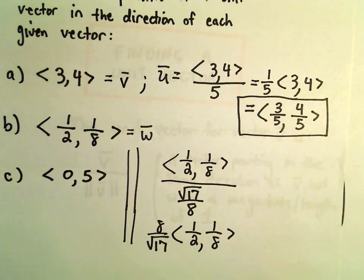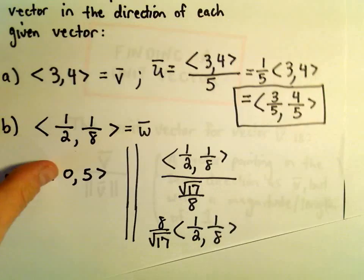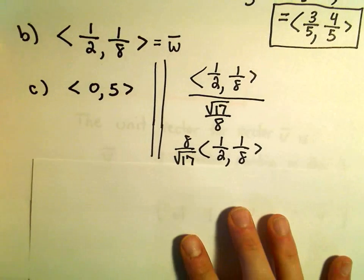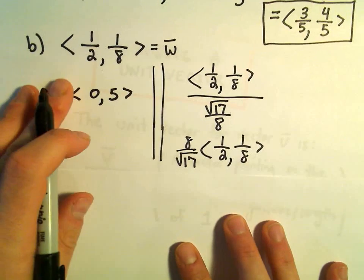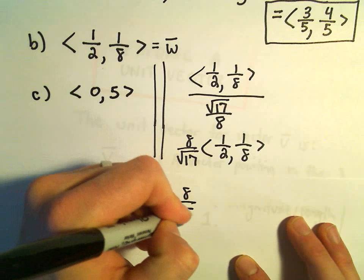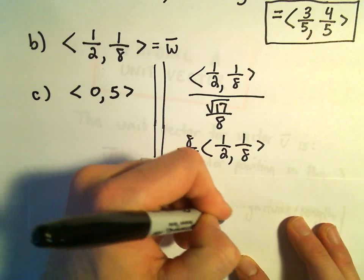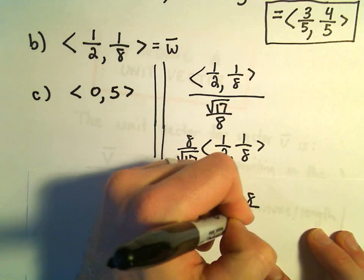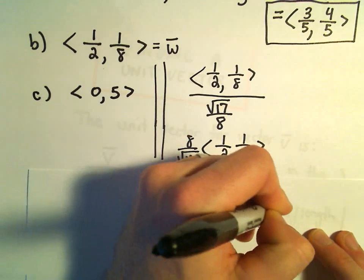Let's see, I think I'm going to run out of room here. That's okay. Let's squeeze it in here on another page. So, we would have to distribute, is all we have to do in this case. So, we'll get 8 over root 17 times 1 half, comma, 8 over root 17 times 1 eighth.